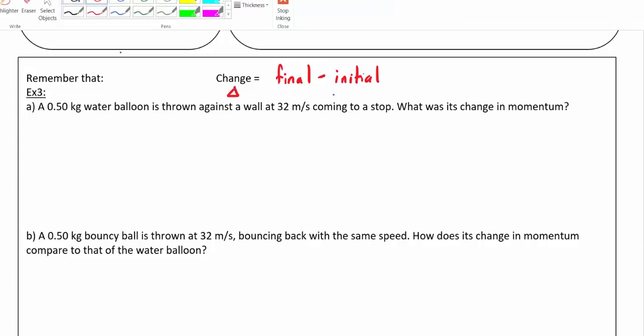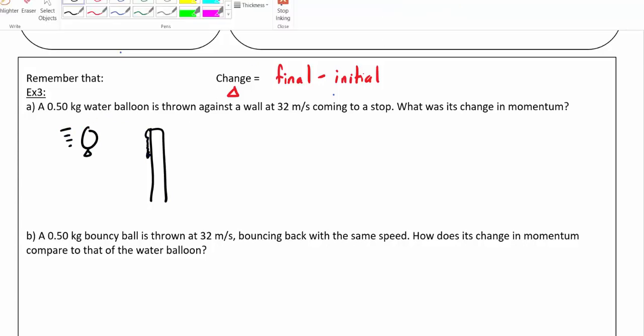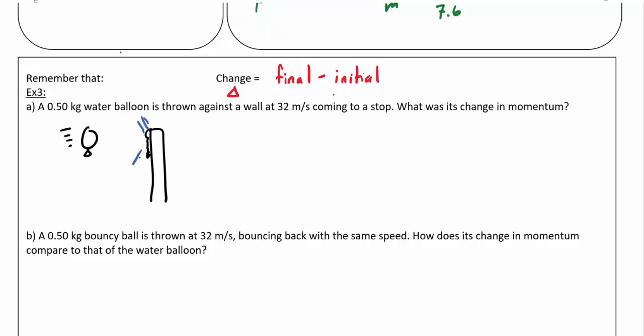Imagine we've got a situation: we're throwing a water balloon against a wall. We take the water balloon and it's whizzing along this way, then it smashes into the wall and explodes in a spray of water. The balloon was initially moving at 32 m/s, and when it hit the wall, it's going to come to a stop. What is its change in momentum?